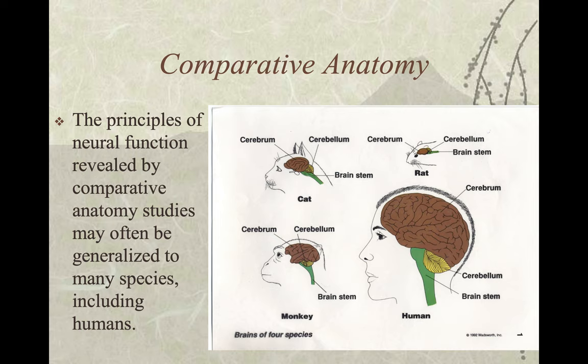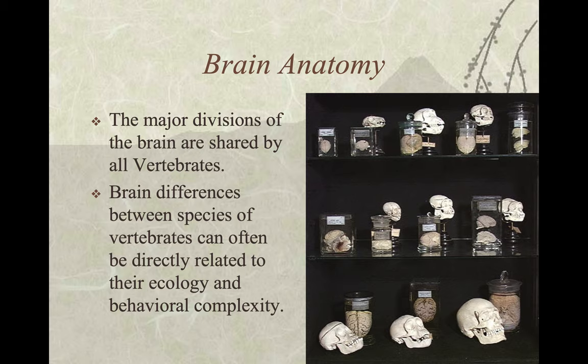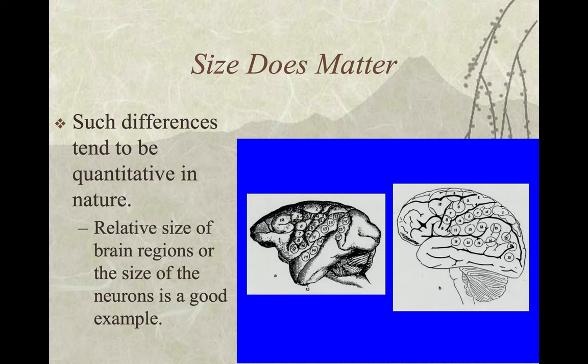The more complex the society you live in, the larger your brain has to be. The more controlled you are and the more you do the same thing as everyone else, the less you have to think, so your brain capacity can be smaller. Such differences tend to be quantitative in nature, relative to the size of brain regions or the size of neurons.